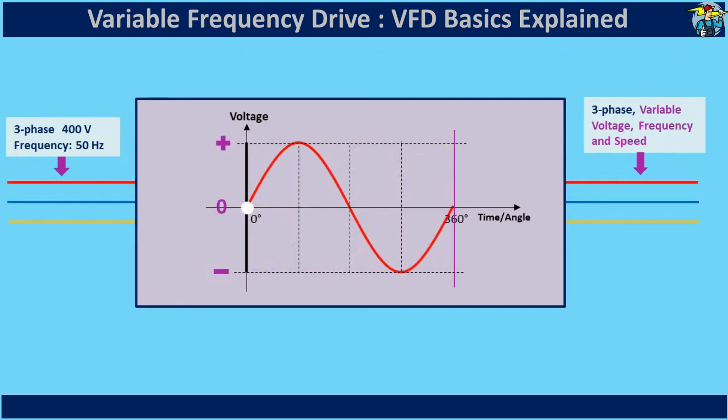When considering the red phase line, voltage values on the negative side of the sine wave become zero when flowing through the diodes. All three line voltages undergo this change in the converter section of the VFD.